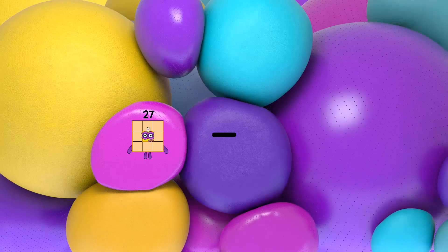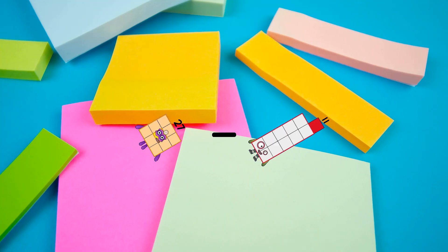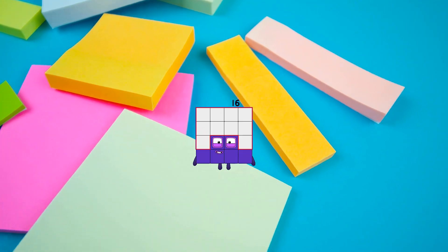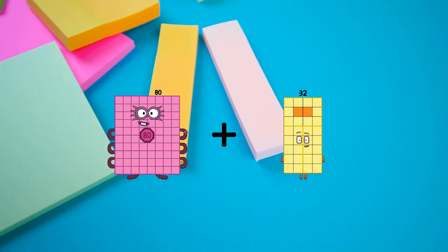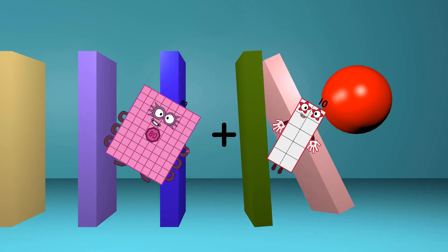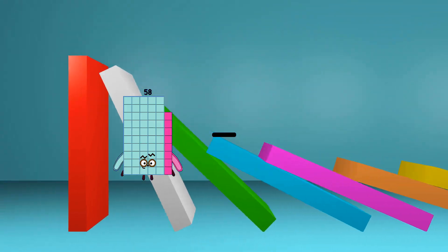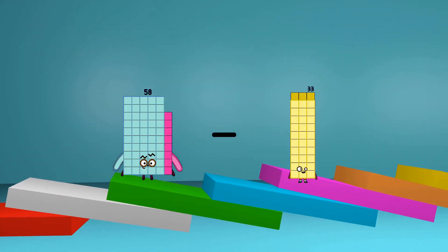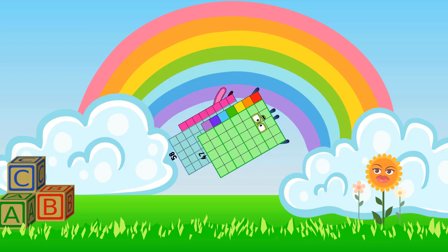27 minus 11 equals 16. 80 plus 10 equals 90. 58 minus 47 equals 11.